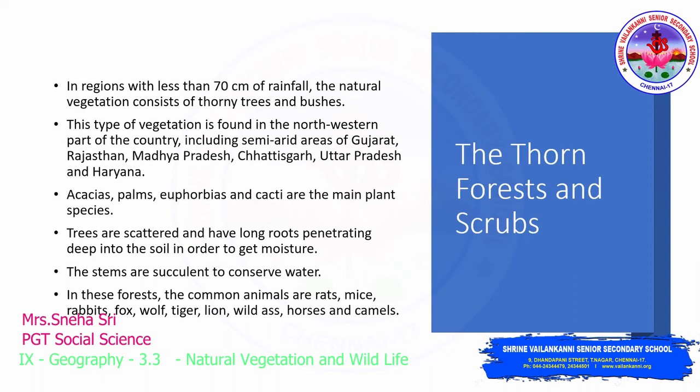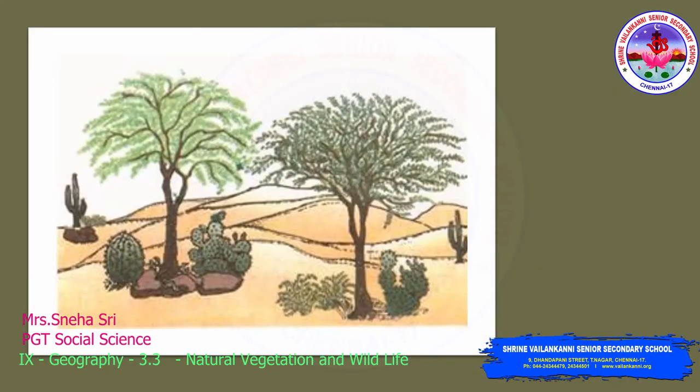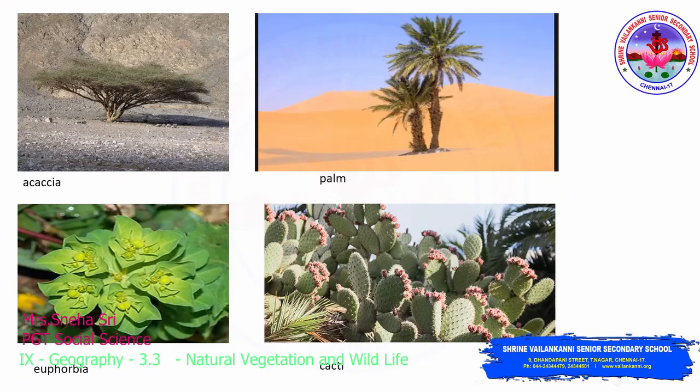In these forests, the common animals are rats, mice, rabbits, fox, wolf, tiger, lion, wild ass, horses, and camels. On the image, you are able to see a sample diagram for this type of vegetation, and you can see acacia, palm trees, euphorbia, and cacti or cactus plants.